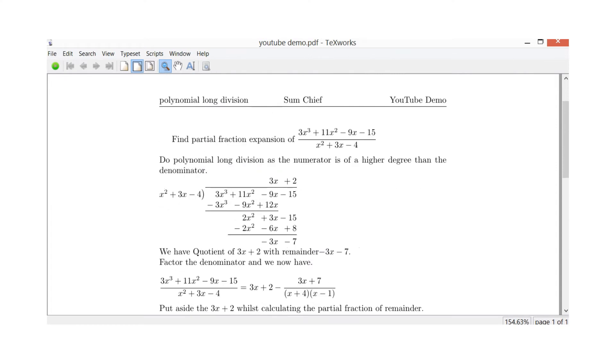Hi everybody, SumChief here. Today we're looking at polynomial long division. We're going to find the partial fraction expansion of 3x cubed plus 11x squared minus 9x minus 15 divided by x squared plus 3x minus 4, and we're also going to show you how to program that into LaTeX to get the PDF output.